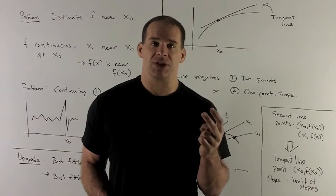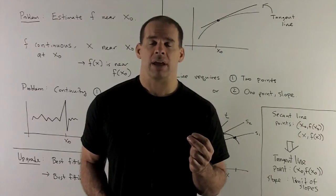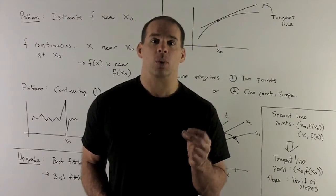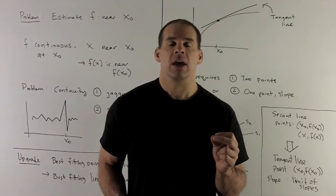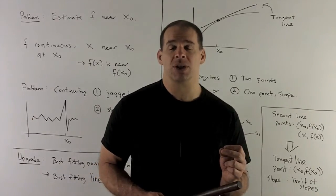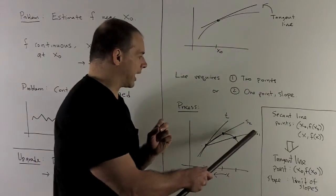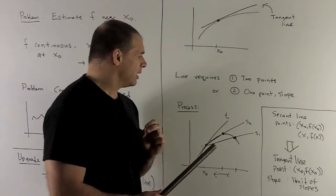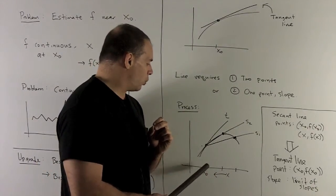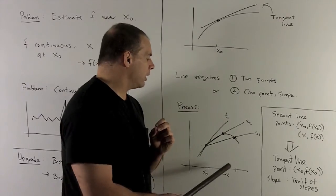So we'll have two points. You'll have the point x0, f of x0, and then x, f of x, where x is near x0. If I connect the dots between those two points, we're going to have what we call a secant line. So picture right here. So like s1 and s2 are going to be secant lines where we're looking at an x0 and an x.